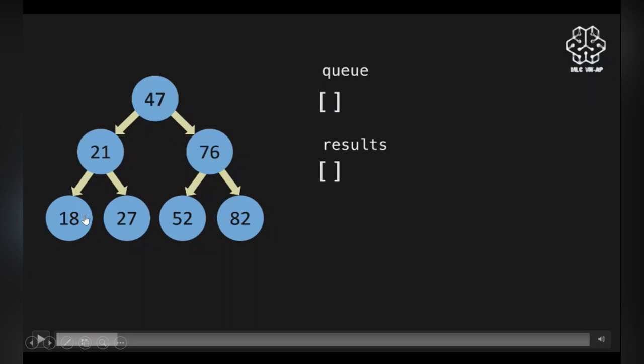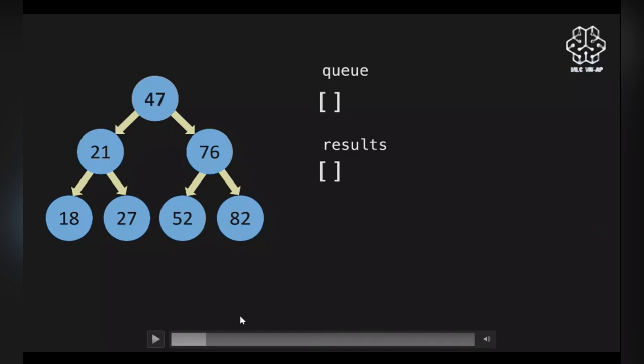Let me tell again what we are going to do: first return 47, then 21, then 76, then 18, 27, 52, 82. Notice — first we return 47, then its left child and then right child. Then we look at 21 and return its left and right child. Then we take 76 and return its left and right child. We previously implemented our queue data structure using linked list, but in this example we are going to use a regular list.